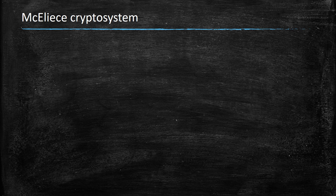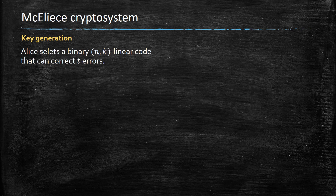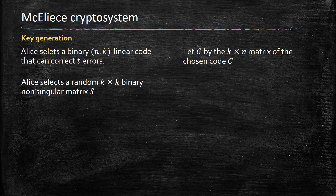The first cryptosystem we are going to see is the McEliece cryptosystem. Here is how we generate the key. We select an [n,k] linear code for which we can correct T errors, and we call this generating matrix G, and we are going to obfuscate G by releasing information that consists of an obfuscation of G.